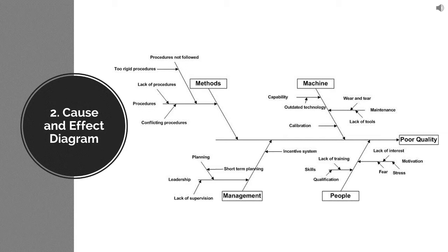Here we have a simple example of poor quality as a problem, as an effect. What are the things which cause poor quality? This is a very general cause and effect diagram, not specific to any particular problem. This is a general cause and effect related to any quality problem.